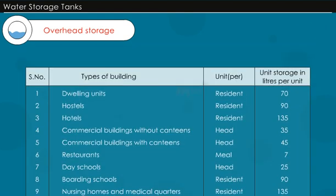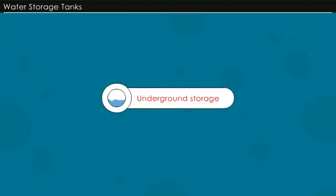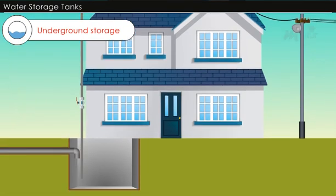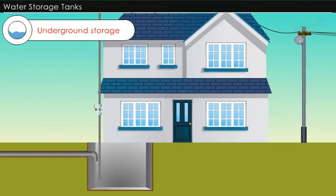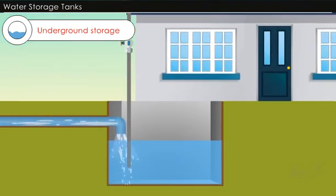In areas of chronic water shortage or intermittent supply, additional overhead storage is required for other domestic uses like washing and bathing, as indicated in the table. Underground storage tanks are constructed below the ground surface or below the least floor level of the building. These tanks are required to collect water from municipal supply lines if the water pressure in the main is insufficient to reach the overhead tank.